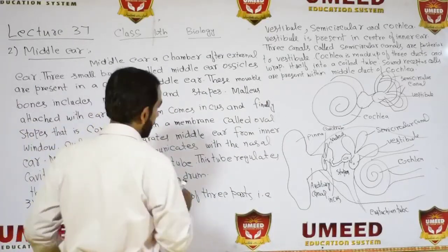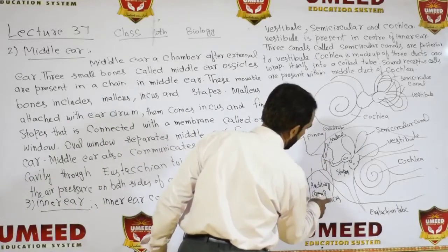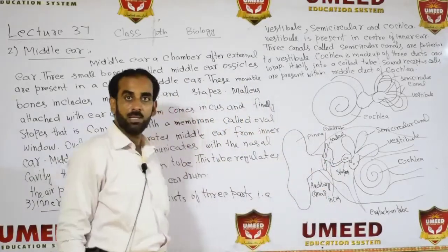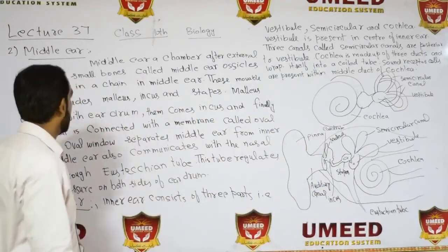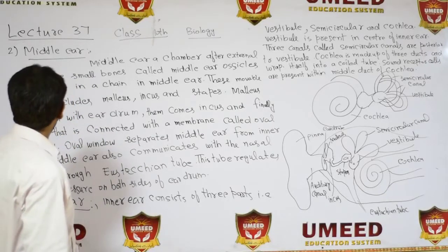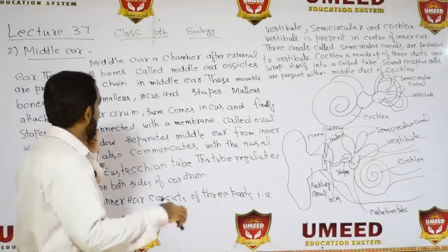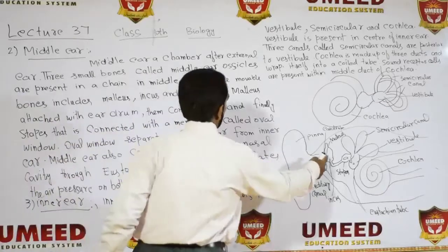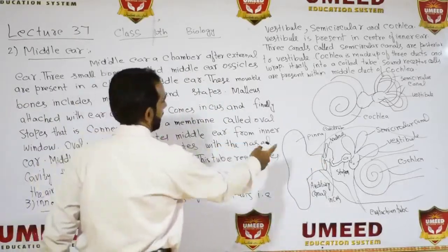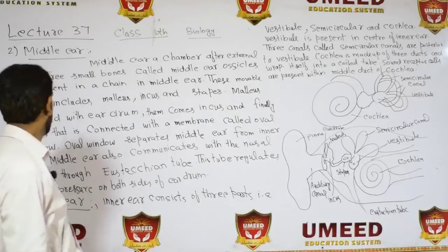The first ossicle is the Malleus, attached to the eardrum. The second one is the Incus. The third one is the Stapes.